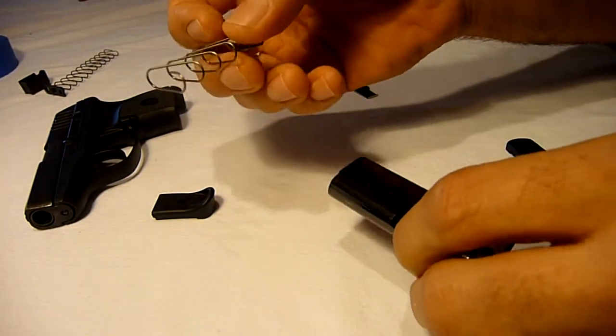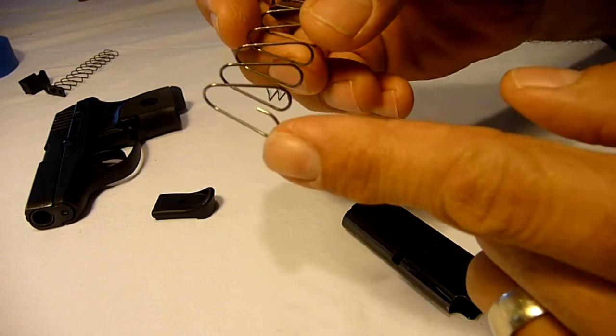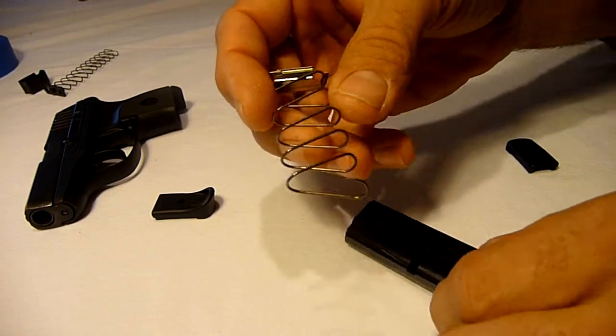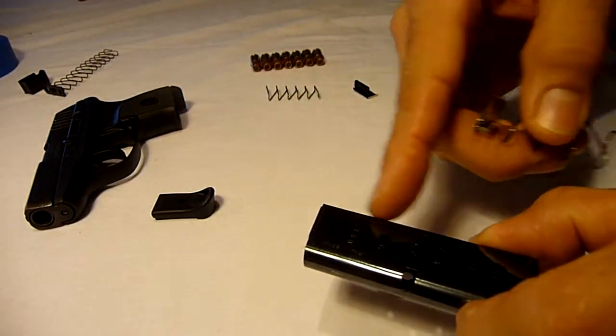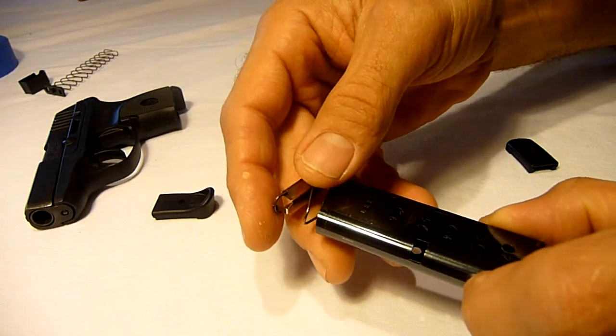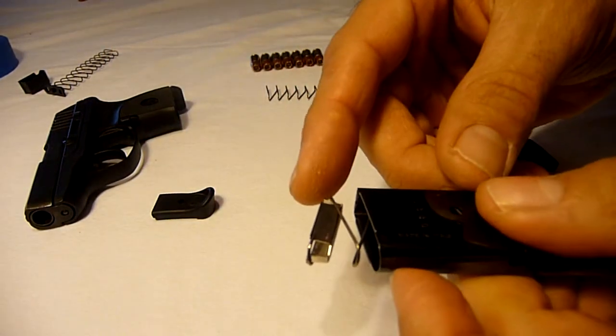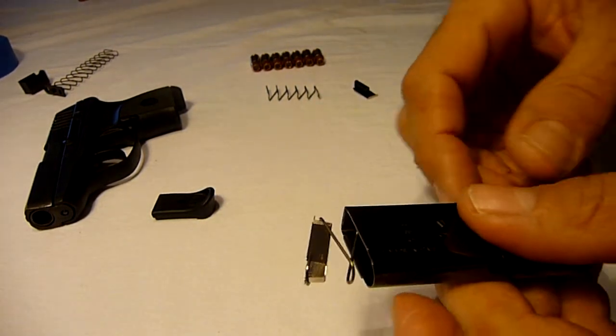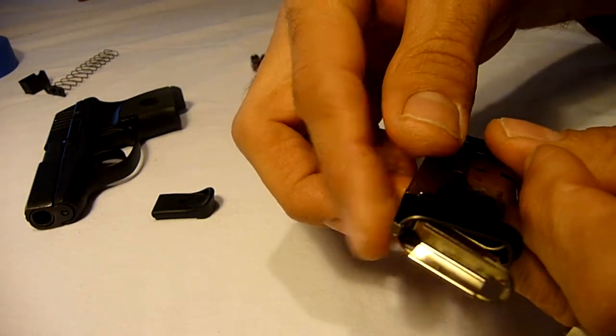Insert the large spring so that the end of the spring is toward the flat side of the magazine. That longer tab on the connecting cup will also end up toward the flat side of the magazine.